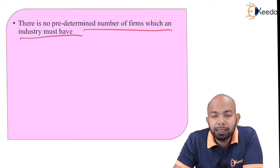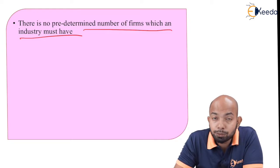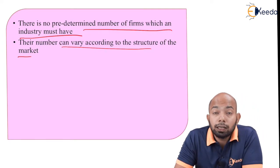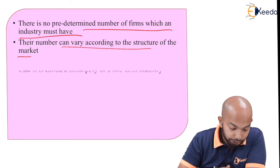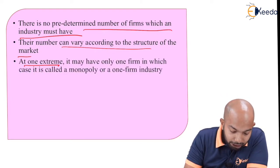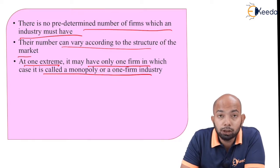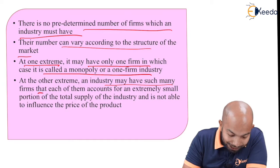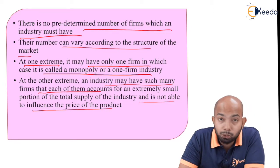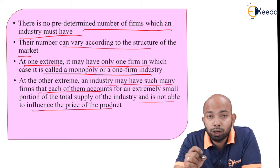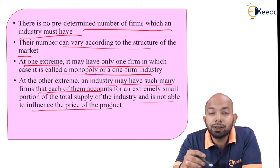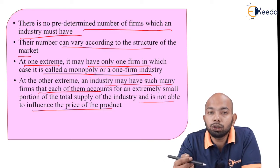There is no predetermined statutory requirement that an industry should have 10 firms to call itself an industry — it can have n number of firms. The number can vary according to the structure of the market. At one extreme it may have only one firm, which is called a case of monopoly or a one-firm industry. At the other extreme the industry may have many firms.